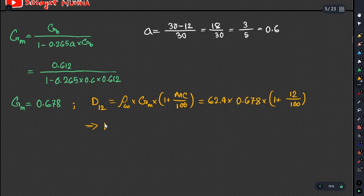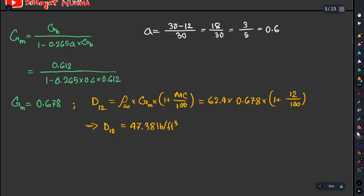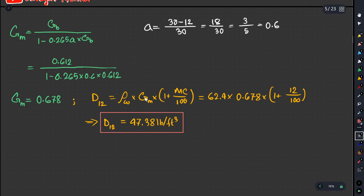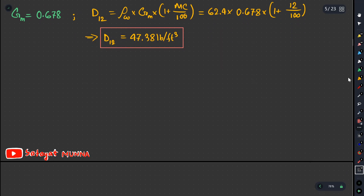Eta equals 47.38 LB per feet cube. Our number is less than 30. If there is more water phase, we can go over the table. We calculate the reducing rate here.